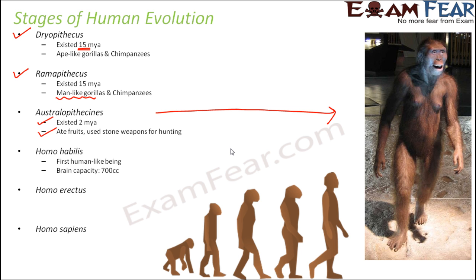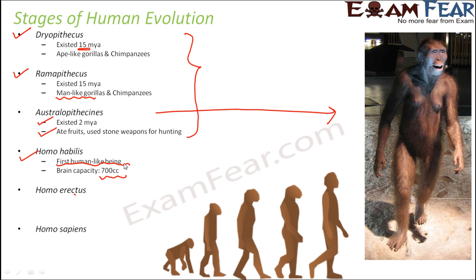From Australopithecus gradually evolved the first human-like being, which had less hair and a more developed brain with a capacity of around 700 cc — compared to about 300 cc in Dryopithecus and Ramapithecus, and about 450 cc in Australopithecus. This was Homo habilis, and they walked like normal human beings do today. That is why Homo habilis is considered the first being that actually looked like humans.